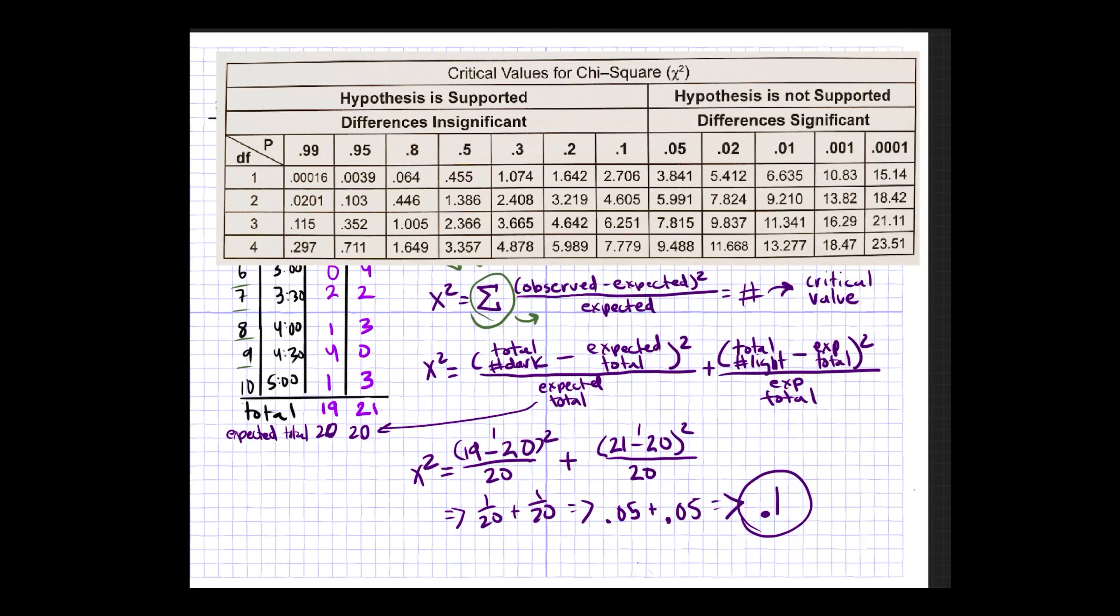Now our critical value is 0.1. To find your critical value, you first find your degrees of freedom on the very left. In this case, since we only have two treatment groups and the degrees of freedom is the number of treatment groups minus one, our degrees of freedom is only one. If we had four treatment groups, then our degrees of freedom would be three. That'd be the treatment groups minus one, and so on and so forth. But since our treatment groups are only two, our degrees of freedom are one.